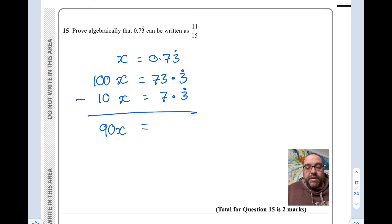So essentially here, you're just doing 73 take away 7, which is 66.